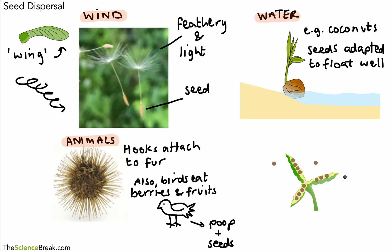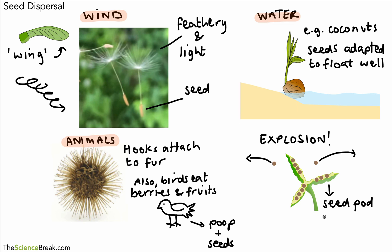We also have one quite interesting method, which is a kind of explosion. This is when seeds are spread as a result of a force exerted by the seed pods. The green part, which is the seed pod, will often dry out in these kinds of plants, and as it dries it squeezes on the seeds until there is so much pressure that they pop out and are spread away from the parent plant.